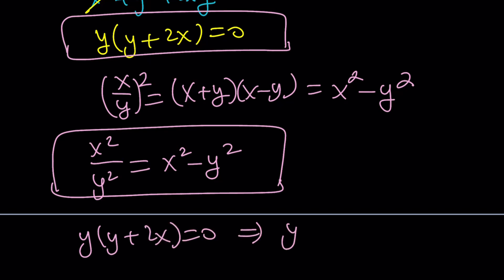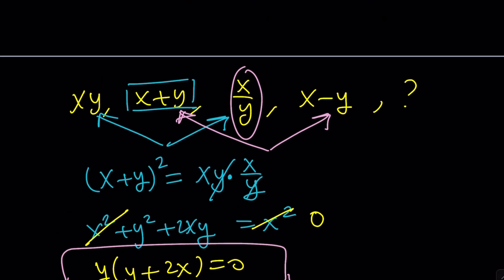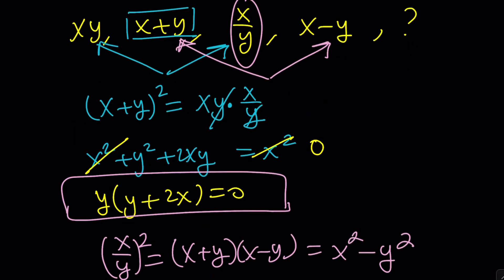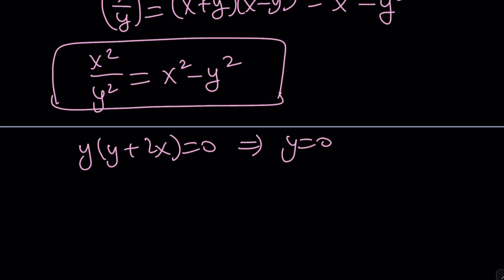From y times y plus 2x equals zero, we get two solutions. One of them is y equals zero, but that's a no-no, because you can't divide by zero. It's not like zero to the power of zero, which is one. You can't divide by zero.